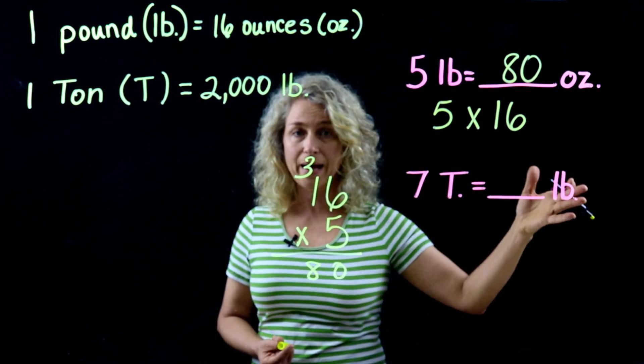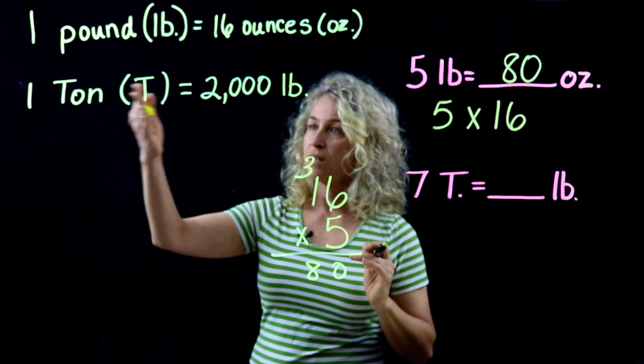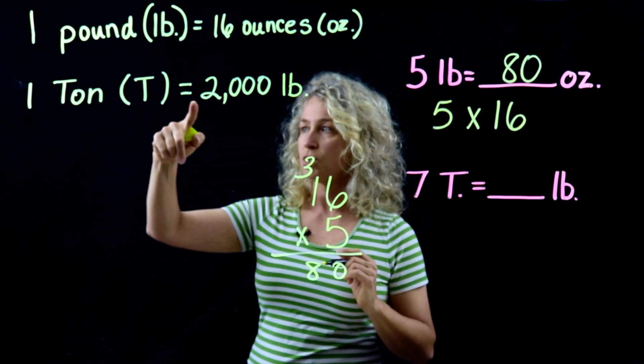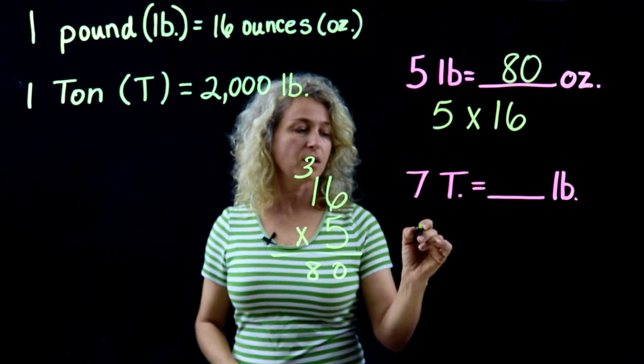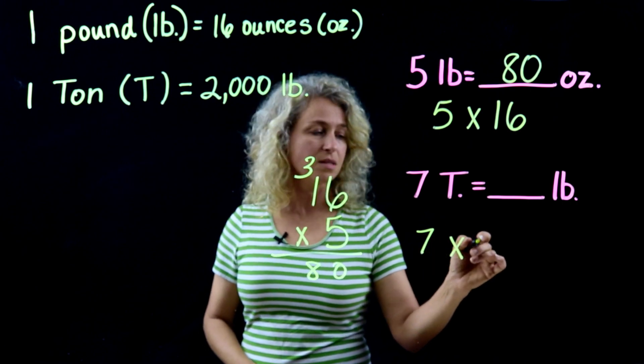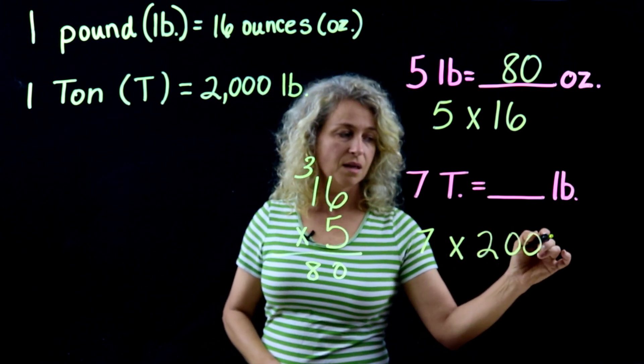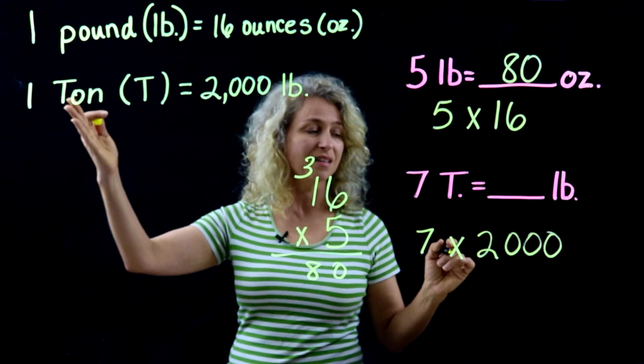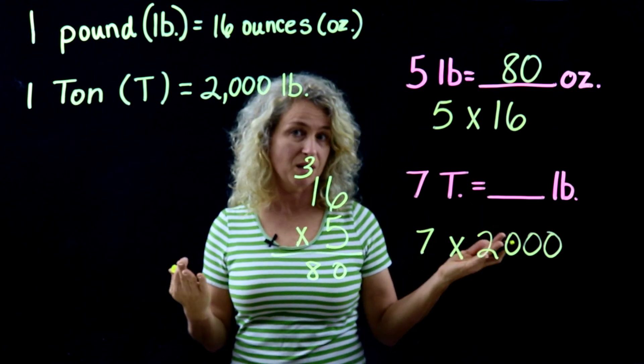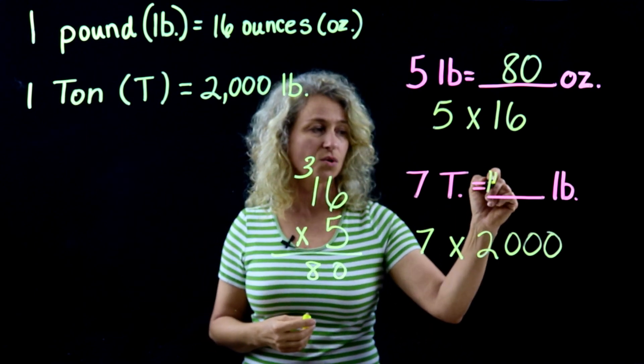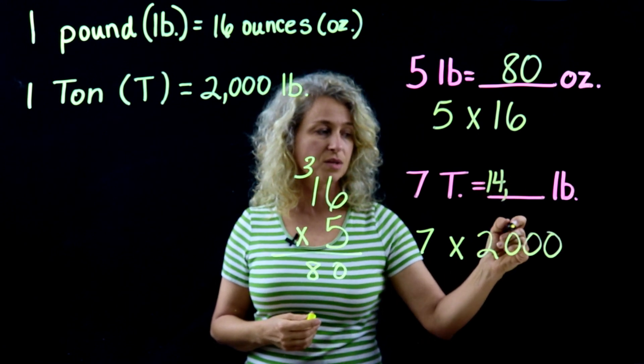All right, here's another easy example: 7 tons equals how many pounds? So we're going to use this particular conversion, and we know that there are 2,000 pounds in a ton. So you can do this mentally: 2 times 7 is 14 with three extra zeros, right? So 7 tons equals 14,000 pounds.